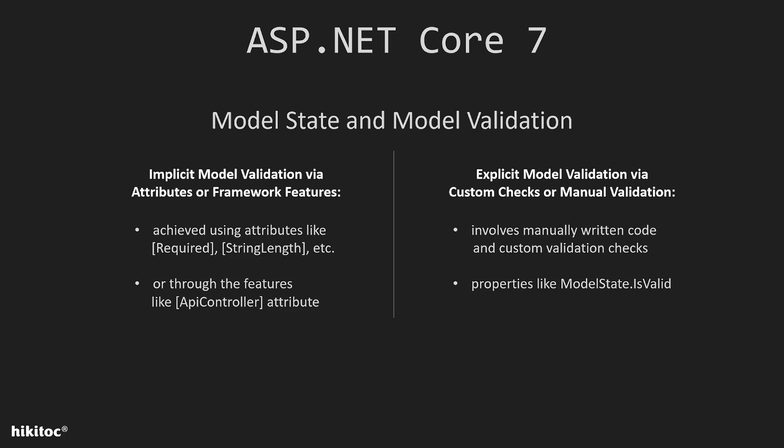The isValid property is executed by .NET Core only if the APIController attribute is missing, indicating that the controller is not declared as of the API type. In the upcoming lesson, we will implement explicit model state validation using the isValid property.